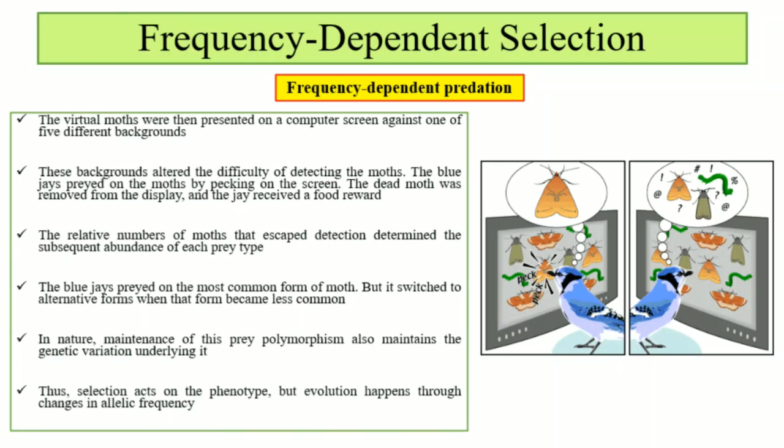The backgrounds varied; the jays and the moths were on the screen. The dead moth was then removed from the display, and the jays received a food reward. The relative number of moths that escaped detection — those moths that blended with the background — escaped detection and were not pecked by the blue jays, representing the remaining population.